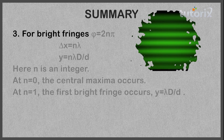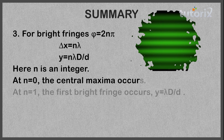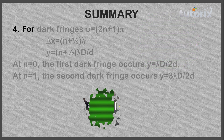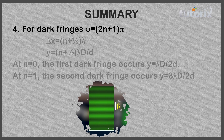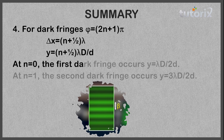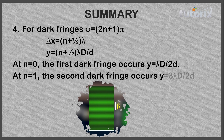For bright fringes, φ = 2nπ and delta x = n·lambda. Therefore, y = n·lambda·D/d, where n is an integer. At n = 0, the central maxima occurs; at n = 1, the first bright fringe occurs at y = lambda·D/d. For dark fringes, φ = (2n + 1)π and delta x = (n + ½)·lambda. Therefore, y = (n + ½)·lambda·D/d. For n = 0, the first dark fringe occurs at lambda·D/(2d); for n = 1, the second dark fringe occurs at 3·lambda·D/(2d).